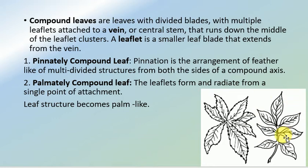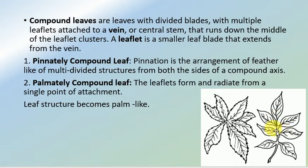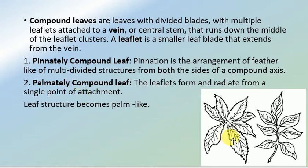These two images show different arrangements. In the first image, the multiple leaflets are arranged in the shape of a palm, while in the other image all leaflets are organized on both lateral sides of a main axis. That arrangement is known as the pinnately compound leaf. Pinnation is the arrangement of feather-like or multi-divided structures from both sides of the compound axis. In the palmately compound leaf, the leaflets radiate from a single point of attachment and form a palm-like structure.